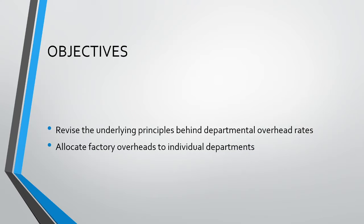So what are our learning objectives for this video? First, we need to revise the underlying workings of the departmental overhead rates. Once we have done this, we will begin looking at an example. Specifically, our focus will be on allocating the fixed factory overheads to the various departments in the factory.